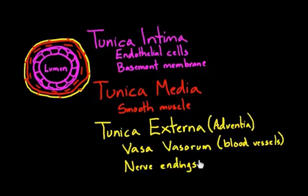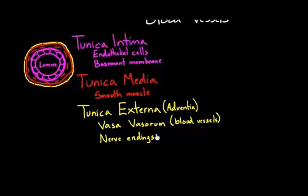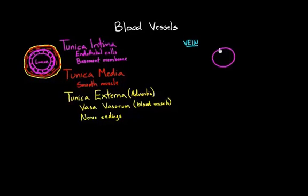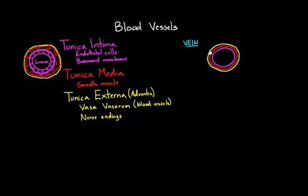So you've got three layers, each with some pretty cool features. Now let's think about each vessel type. Starting with veins: on the inside, a vein has the tunica intima layer — the endothelial cells and basement membrane. It also has a smooth muscle layer, the tunica media, and a tunica externa as the third outer layer. Veins follow this general three-layer pattern pretty straightforwardly.